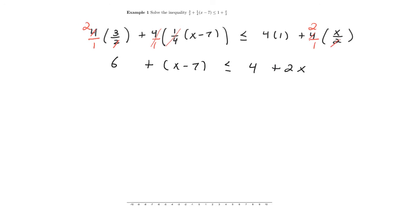Let's see, I don't need the parentheses on the left side. So now I can start simplifying the left. That's 6 minus 7. So this is going to be x minus 1 is less than or equal to 4 plus 2x. So just simplify the left side. That shouldn't change anything.